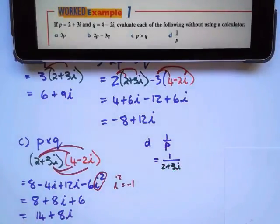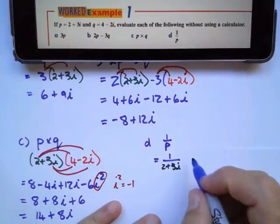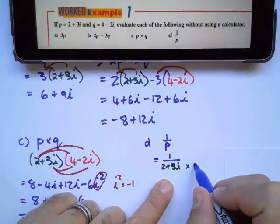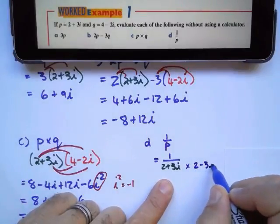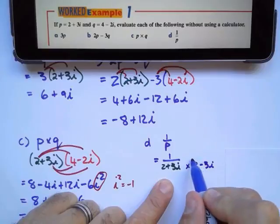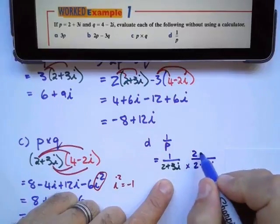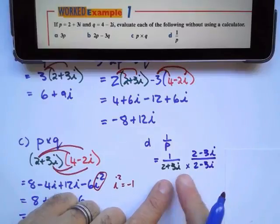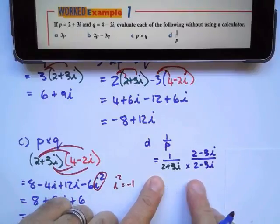Now remember that if I have a complex number, I have to rationalize the denominator. So what I'm going to do is multiply by the conjugate of this. The conjugate of 2 plus 3i is 2 take away 3i. But if I multiply that at the bottom, I must multiply with that at the top as well.